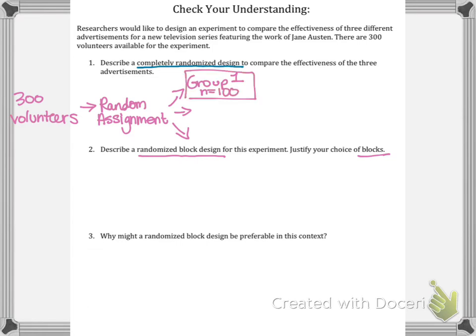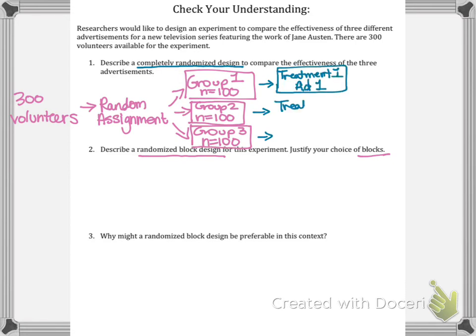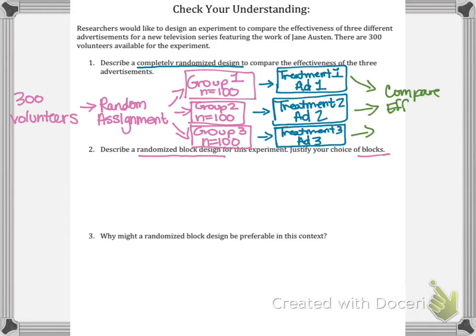Group one gets 100 people, group two gets 100, and group three gets 100. They receive ad one, ad two, or ad three depending on which group they're assigned to. At the end, we compare the effectiveness of those advertisements.